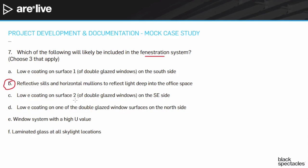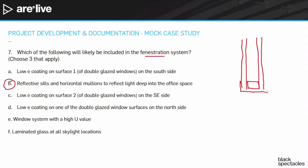Answer C: low-E coating on surface two of double-glazed windows on the southeast side. Let's think about the surface numbering. A double-glazed window has one piece of glass, another piece of glass, and a spacer holding them together — probably with argon gas in between. That gives us four surfaces: surface one on the outside, then two, three, and four going inward.